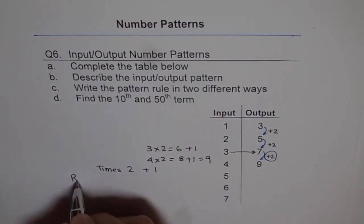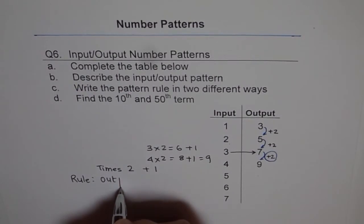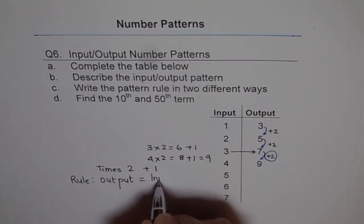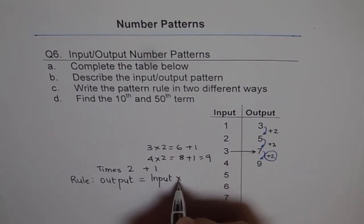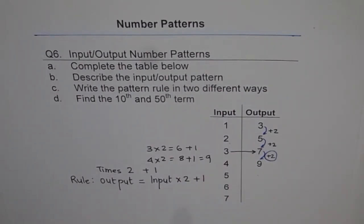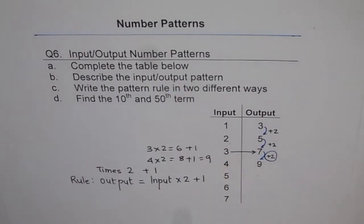That is how we will get our rule. And therefore, pattern rule is output equals to input times 2 plus 1. So that becomes our pattern rule. And this is how we are going to describe input-output pattern.